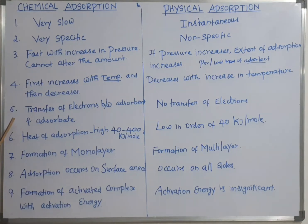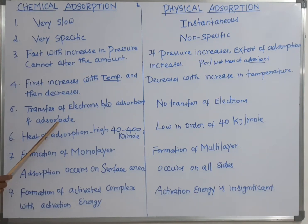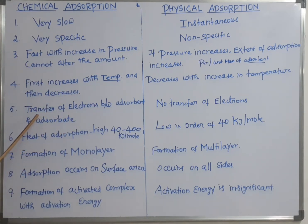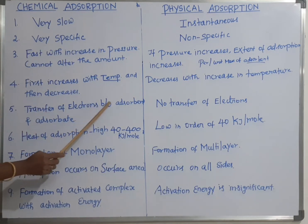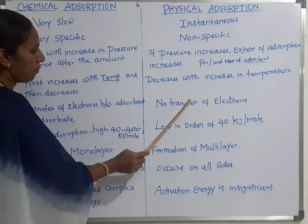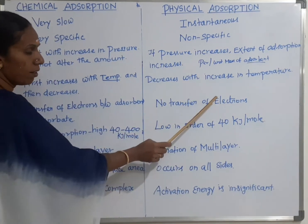Fifth difference: in chemical adsorption, there is a transfer of electrons between adsorbent and adsorbate, resulting in bond formation — one strong bond is formed. But in physical adsorption, there is no transfer of electrons.